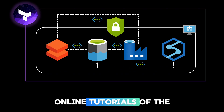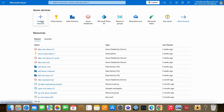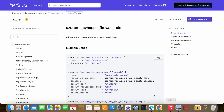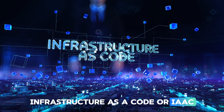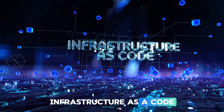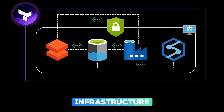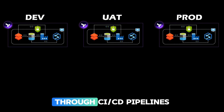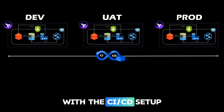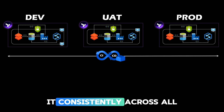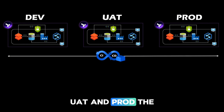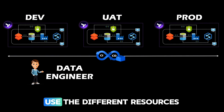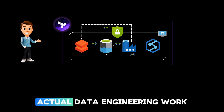Unlike what you see in online tutorials, in real time nobody goes to the portal and creates resources from the UI. Instead, all resources are created using scripts such as Terraform or Bicep — a process called Infrastructure as Code (IaaC). The main reason is consistency, since the same script can be used to set up the same infrastructure in different environments such as dev, UAT, and prod. These infrastructure deployments are automated through CI/CD pipelines by the DevOps engineers. With this CI/CD setup, any changes to the infrastructure can be applied consistently across all three environments. Only after the infrastructure has been set up in dev, UAT, and prod will data engineers come into the picture and start the actual data engineering work.